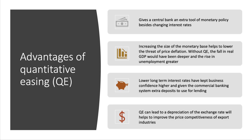In this video I'll quickly take you through four advantages of QE and then counterbalance with four disadvantages and four evaluation points. The first advantage of QE is that it gives the central bank — the Bank of England or European Central Bank for example — an extra instrument or extra tool of monetary policy. When they've cut interest rates to zero and can't cut them any further, it gives them an extra club in the golf bag — an extra variable they can adjust.